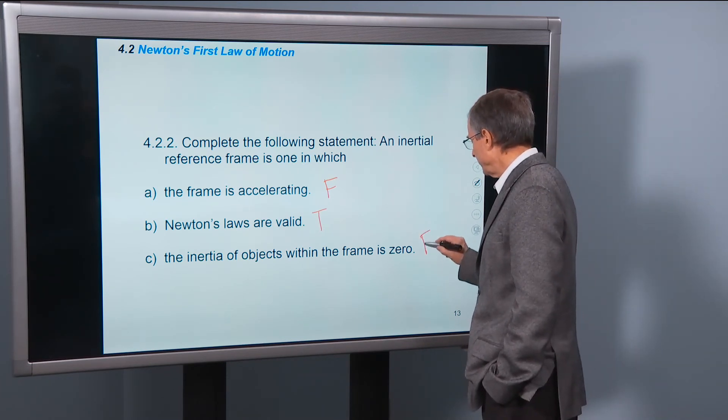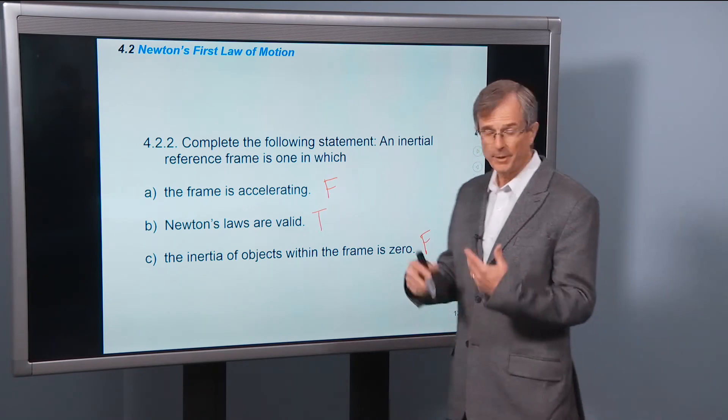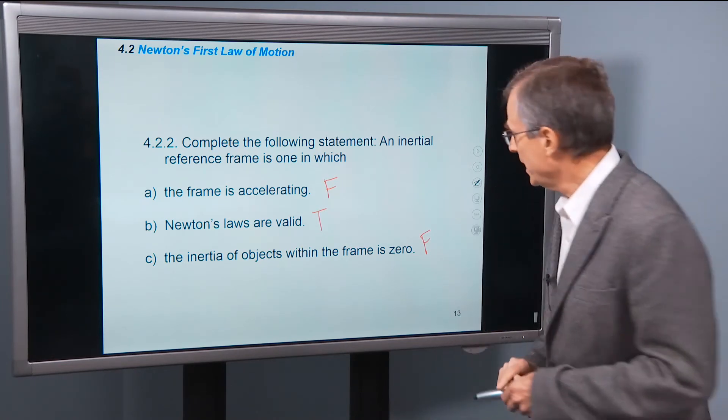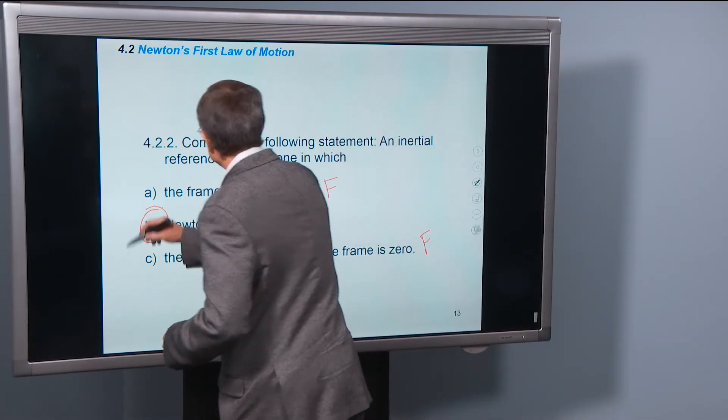Is one in which the inertia of objects within the frame is zero? Well, not necessarily. There are going to be objects that have mass and inertia, and so that's false. So the answer is B.